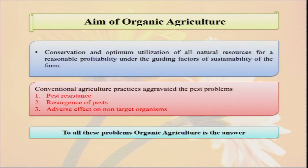Conventional agricultural practice aggravates the pest problem when you are applying too much insecticide and pesticide. There may be some resistance. Just as when we take different types of antibiotics in the human body, sometimes antibiotic resistance develops. Similarly, in insect pests, when we apply too many insecticides, through nature's own process, these insects also develop some type of resistance mechanism.